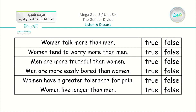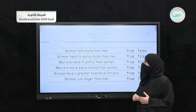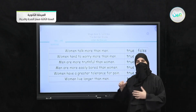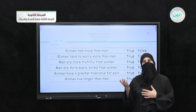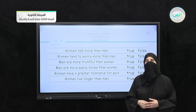Third statement: men are more truthful than women — do you think women lie more than men? Fourth: men are more easily bored than women. Fifth: women have a greater tolerance for pain. Sixth: women live longer than men. This is the same chart from our book. You can, with a pencil, check which ones you think are true or false. We will go back and revise our answers at the end.